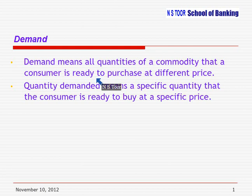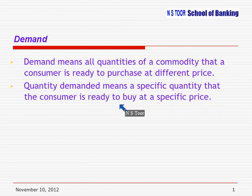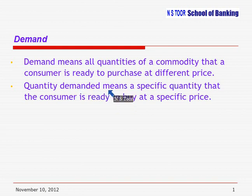On the other hand, we have another concept called quantity demanded. Quantity demanded means a specific quantity that the consumer is ready to buy at a specific price. So demand means all quantities at different prices, whereas quantity demanded represents a specific quantity at a specific price the consumer is ready to buy. That is called quantity demanded.